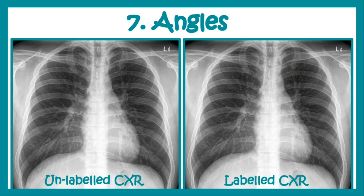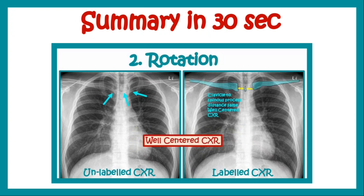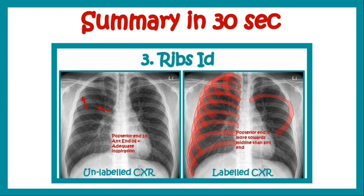Finally we look for the angles made by the diaphragm — that is the cardiophrenic angles and the costophrenic angles. In these angles we look for collection of fluid in case of hemothorax or pyothorax. So looking for costodiaphragmatic and cardiophrenic angles is also very important. This is what we learned in this video.